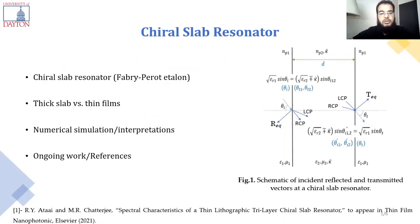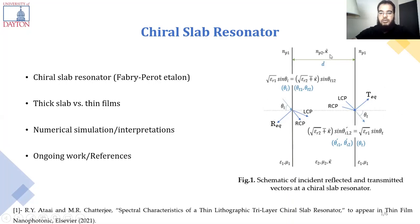First, let's talk about chiral slab resonators. As we can see here in the schematic, we have a chiral slab with a thickness d. To the left and to the right we have a chiral material. We have the Kaba factor here in the slab.